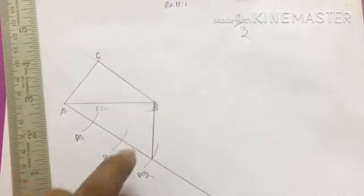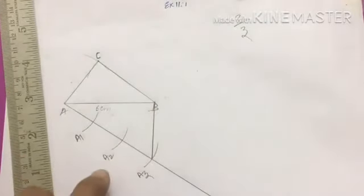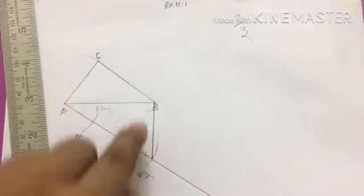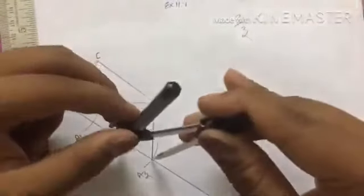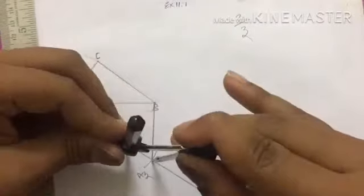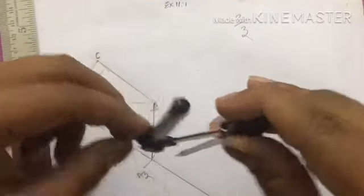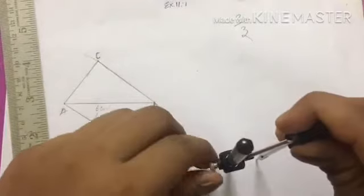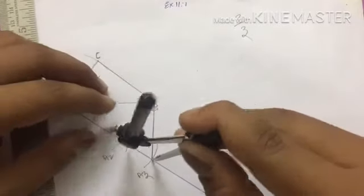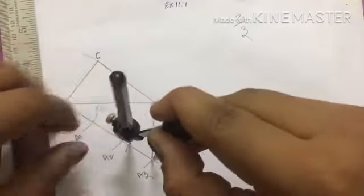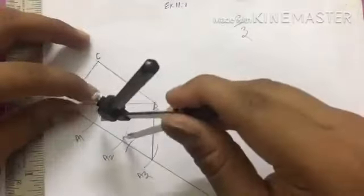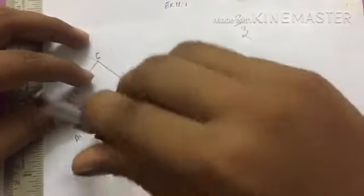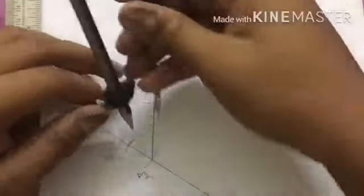The numerator is 2, so through A2 we will construct a parallel line to BA3.